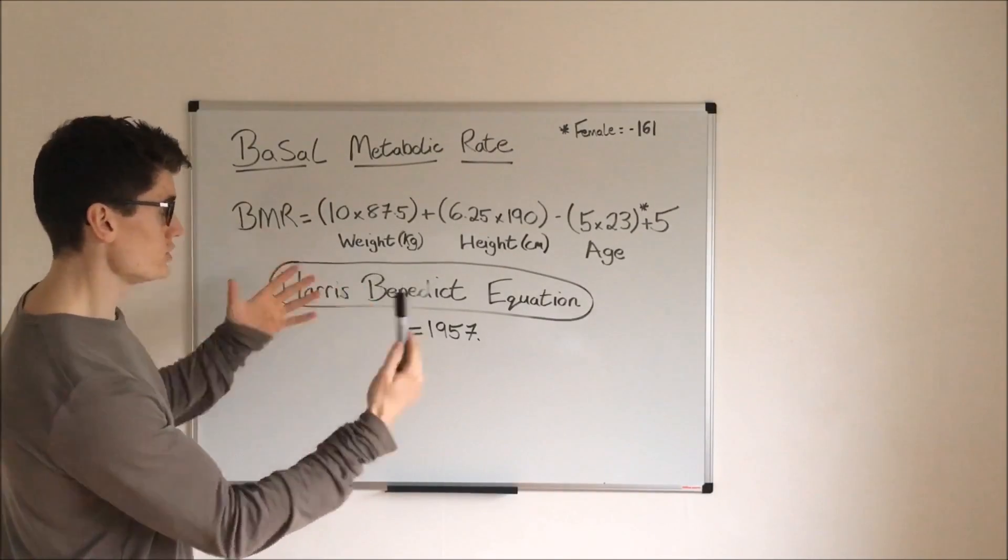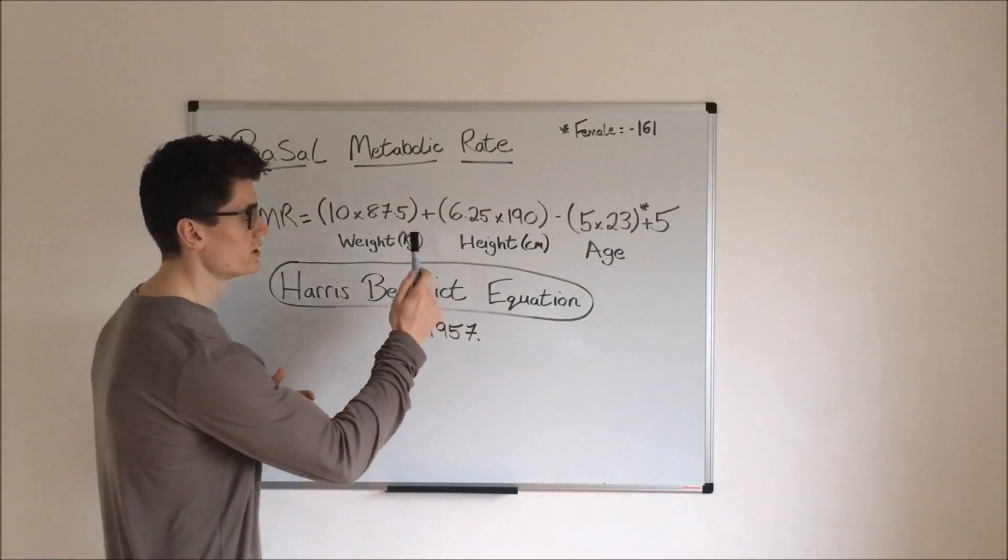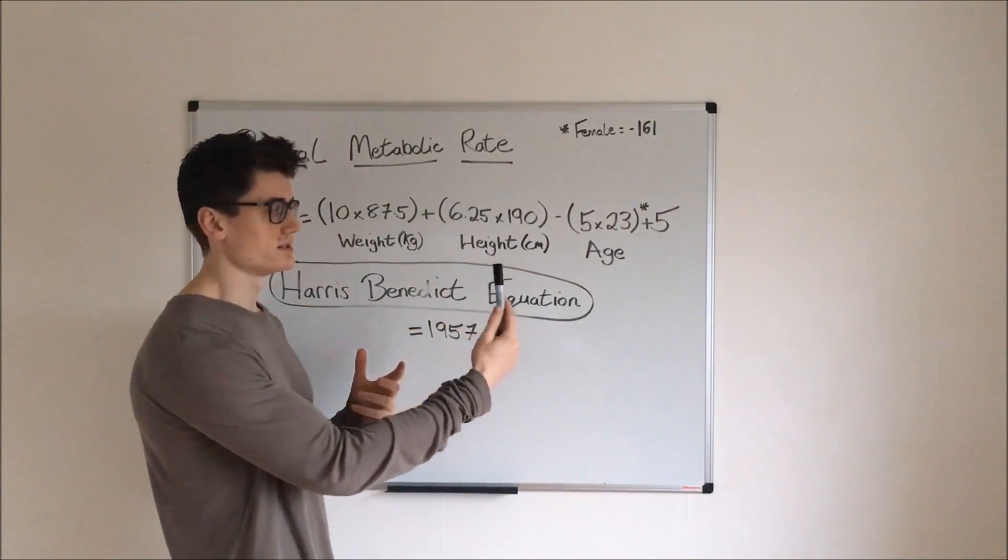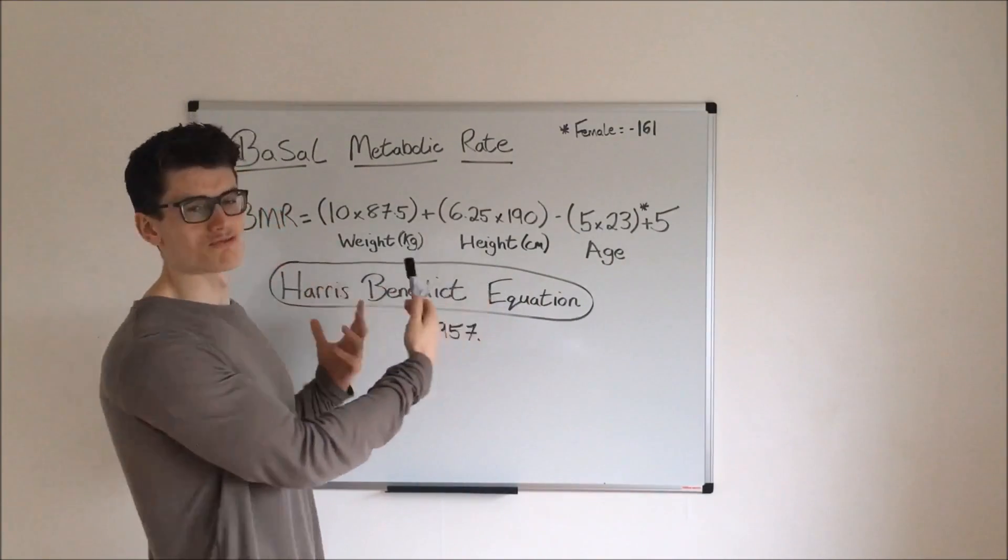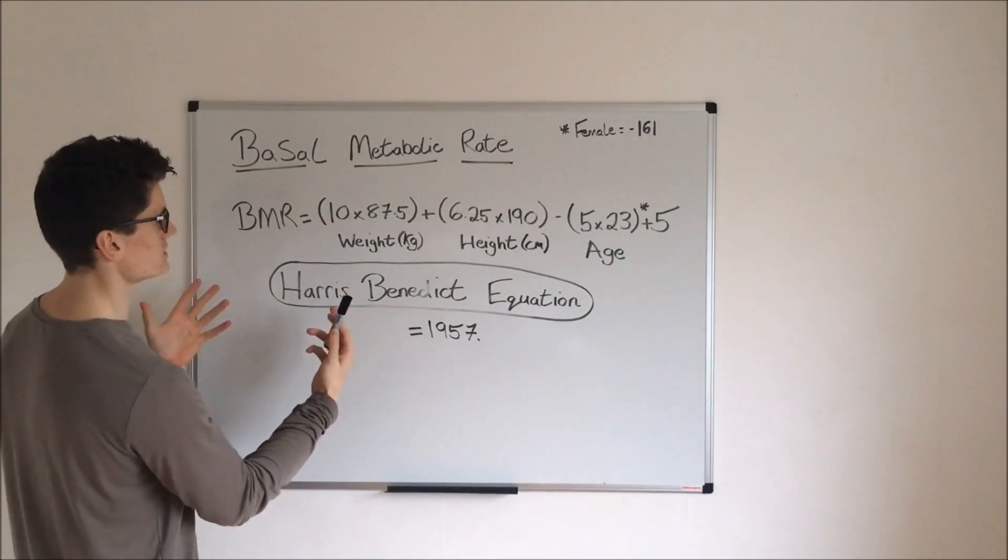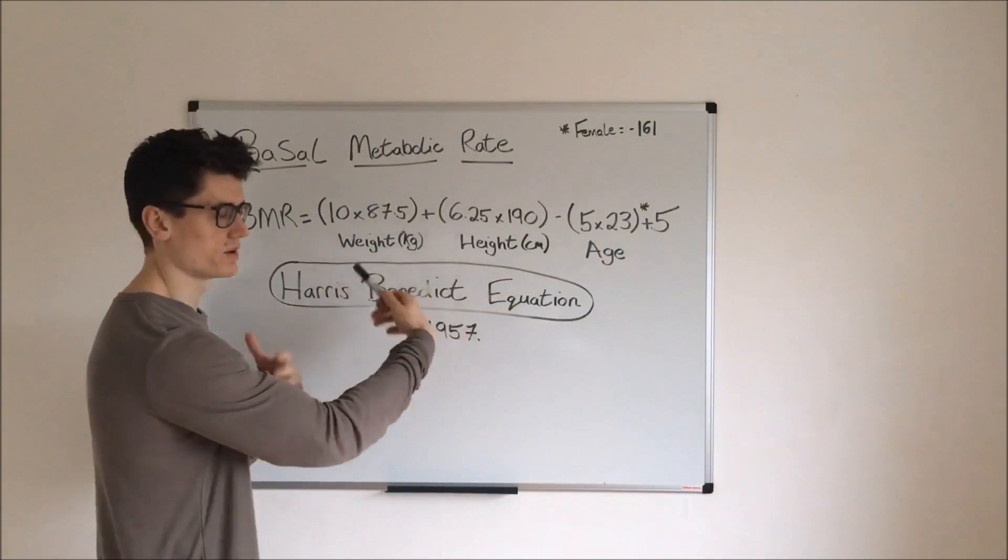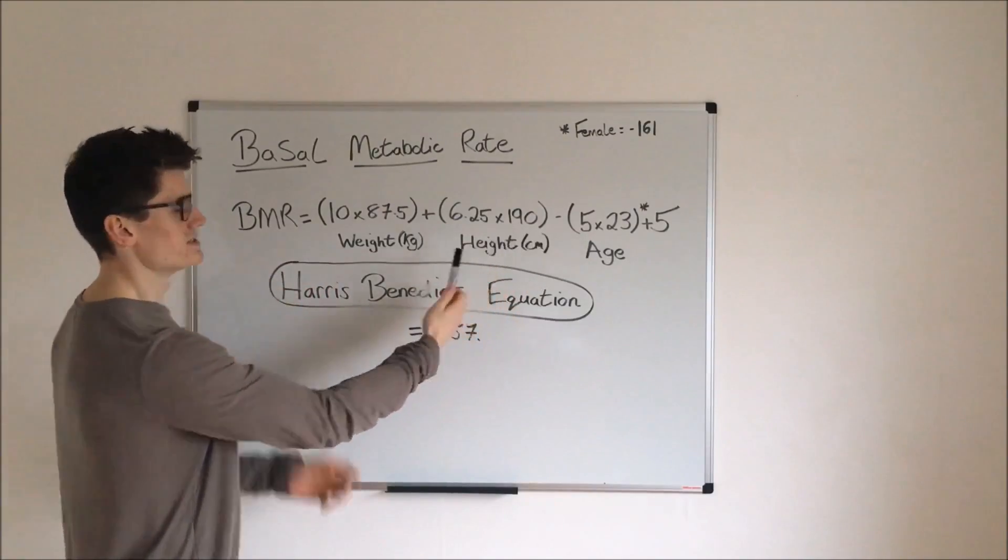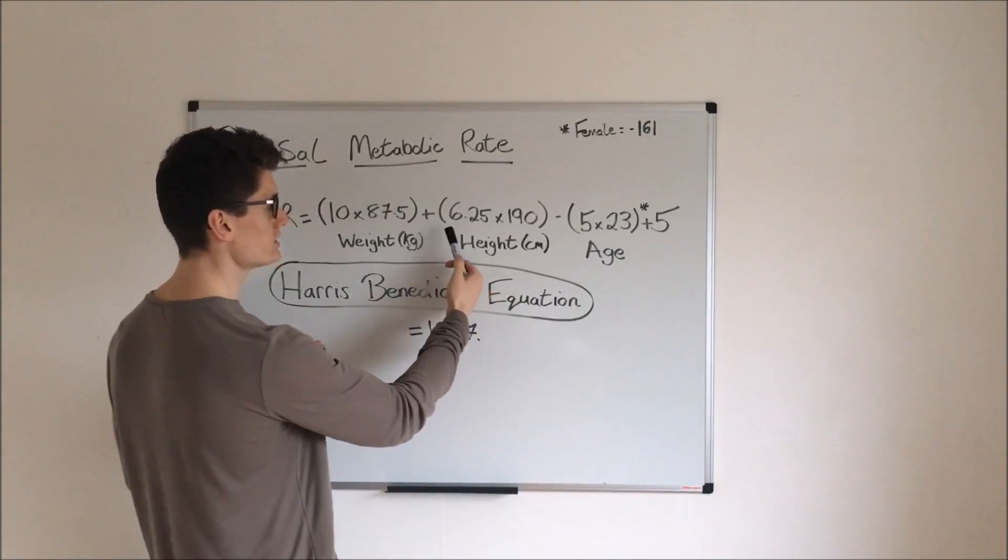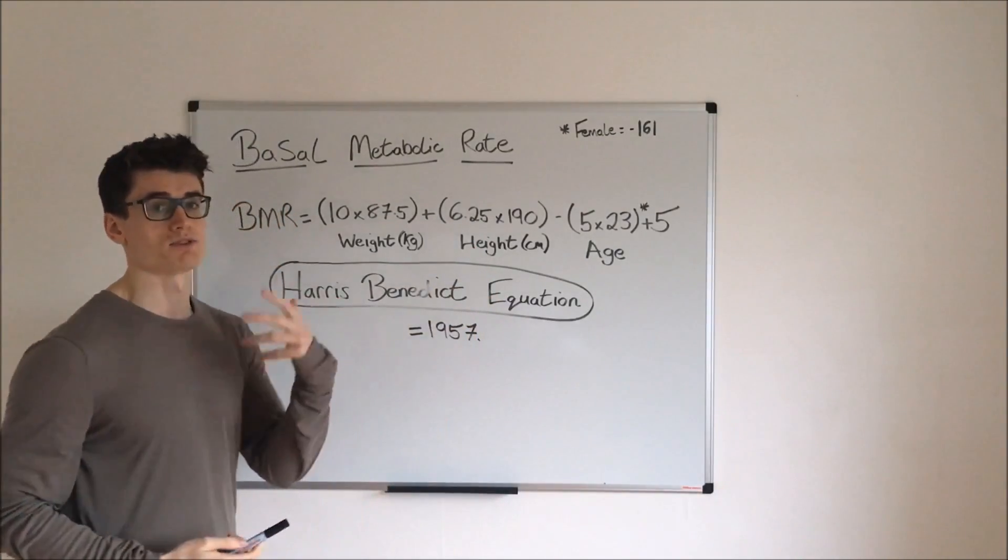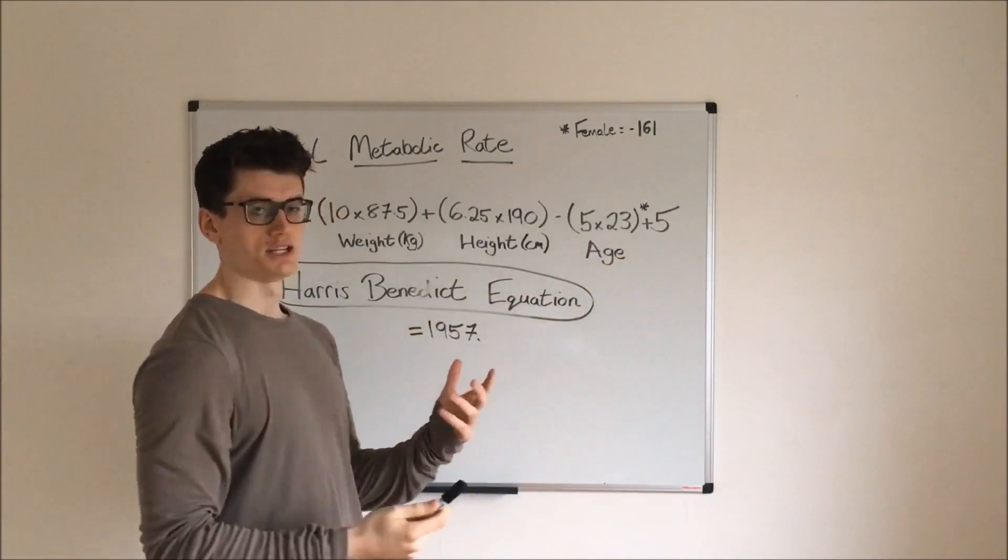What you need for this equation is your weight in kilograms, your height in centimeters, and your age. Hopefully you should know all of them or at least have a rough idea. Going through step by step, it's 10 times your weight in kilograms—these are my figures, so I'll put them in: 10 times 87.5, plus 6.25 times 190 (that's my height), and then minus 5 times my age, being 23.